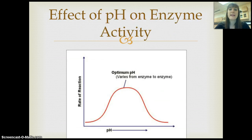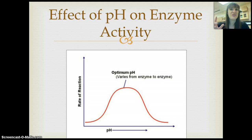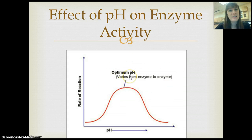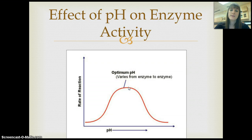Another thing that can affect enzyme activity is pH. If pH is too low or too acidic, it can interact with the protein, change its 3D shape, and make it so the protein doesn't work. If pH is too high or too basic, that can also change it. There's going to be an optimum pH for every single enzyme, and it differs between enzymes. An enzyme in your stomach acid works better in an acidic environment, while an enzyme in your saliva works better in a more neutral environment.